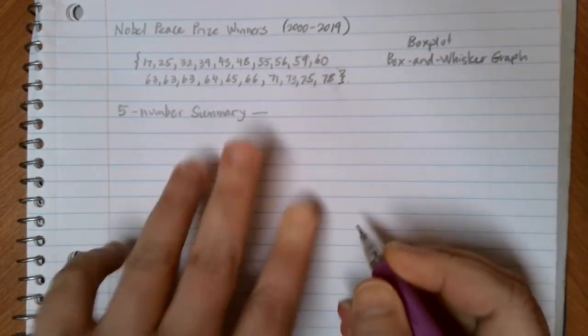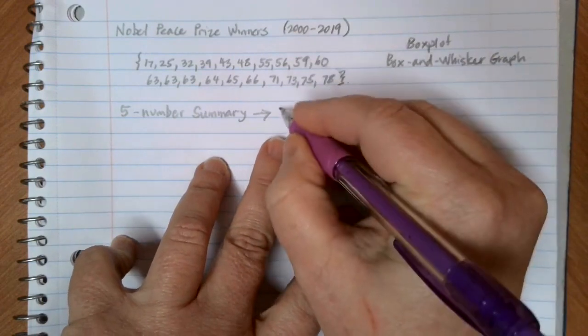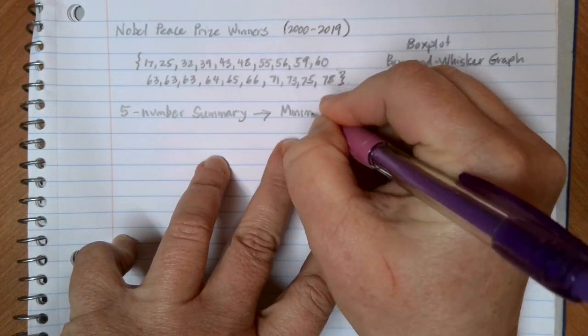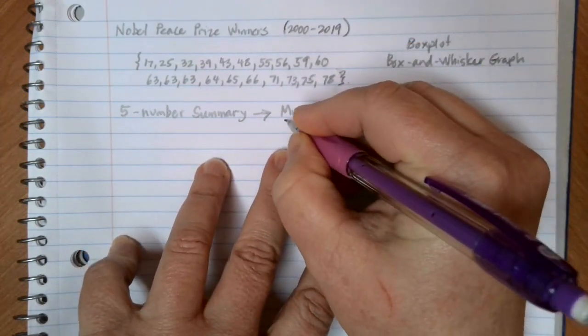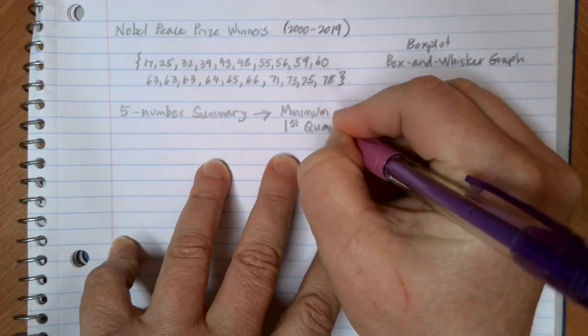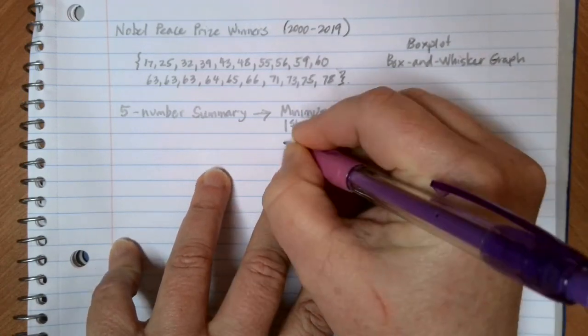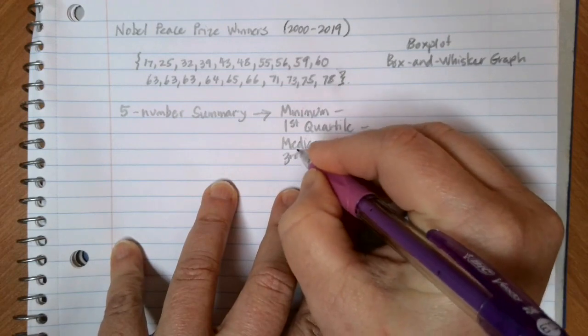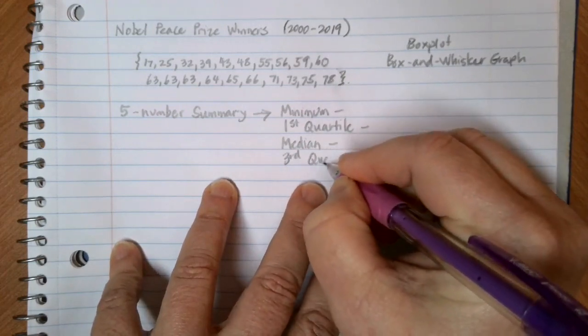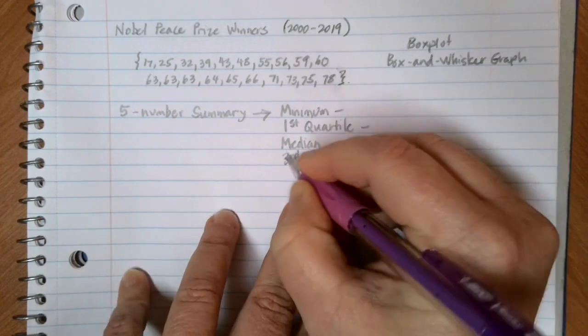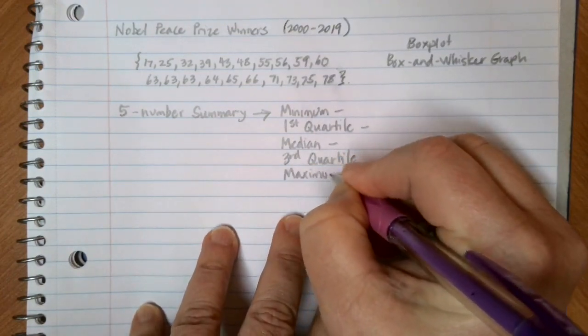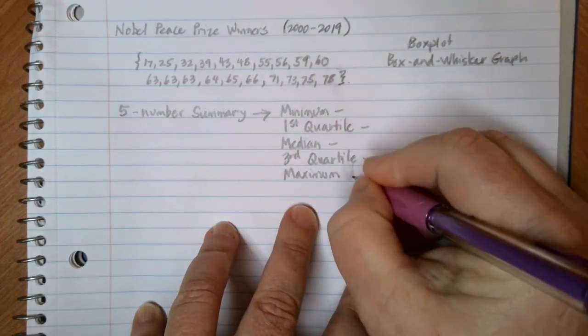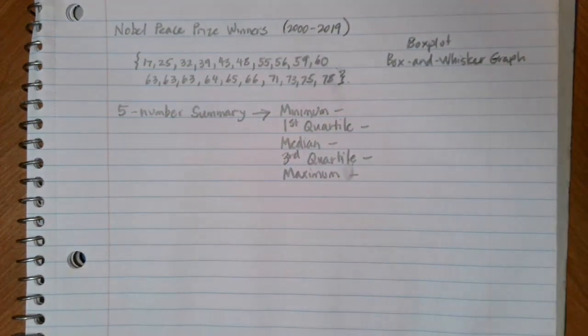We've talked about all of these before in terms of what they mean. So we want to know what the minimum value in our data set is. We want to know what our first quartile is. We want to know what our median is. We want to know our third quartile. And we want to know our maximum value for our data set.